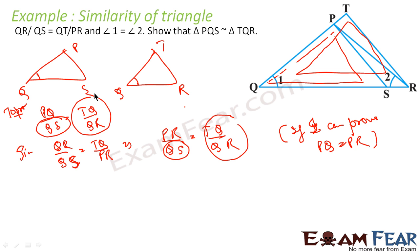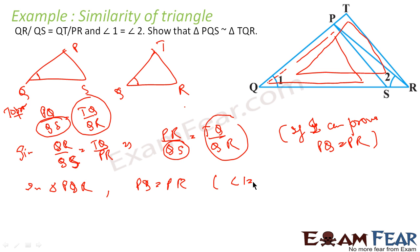Now I need to prove PQ is equal to PR. In triangle PQR, since angle 1 is equal to angle 2, I can say that PQ is equal to PR. This was my reverse engineering approach — you don't write this working out, but start your formal solution from here: in triangle PQR, PQ is equal to PR since angle 1 is equal to angle 2.